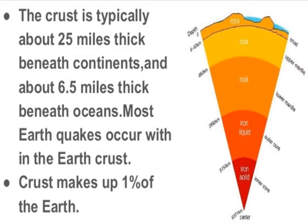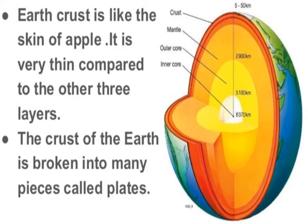The Earth's crust is like the skin of an apple — it is very thin compared to the other three layers. As shown in this diagram, the crust is the outermost layer and is very thin compared to the other three layers. The crust of the Earth is broken into many pieces, and these pieces are called plates.